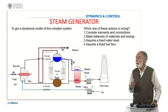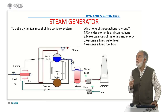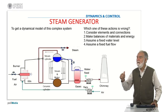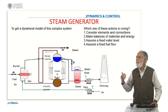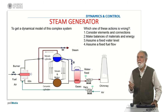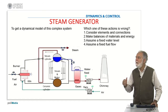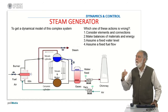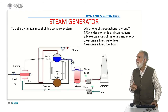If we want to get a dynamic model of the steam generator, we cannot assume that the water level is fixed, because the water level is an internal variable of the system and it will depend on the actions we apply. If we open the steam, open the fuel, or increase the speed of the fans, all of this will influence the level of the water.